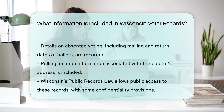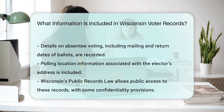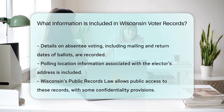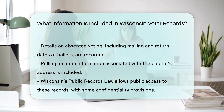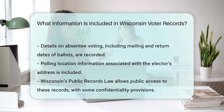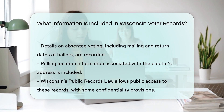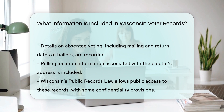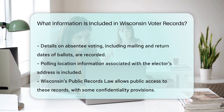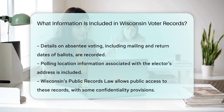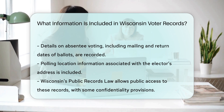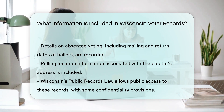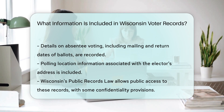Confidential information: certain information, such as the date of birth, is kept confidential and is only accessible to select government officials and specific entities for official purposes. Wisconsin's public records law allows members of the public to inspect these records unless a provision permits them to be kept confidential. This means that groups may use the publicly available information to contact individuals for various purposes.